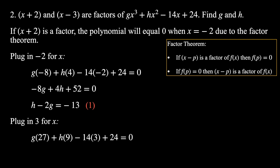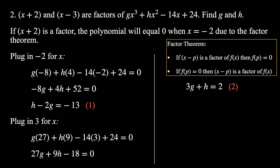Plugging in x = 3: 3³ = 27, 3² = 9, giving 27g + 9h − 42 + 24 = 0, which simplifies to 27g + 9h − 18 = 0. Dividing through by 9: 3g + h = 2. This is equation 2. So now we have two equations with two unknowns that we can solve for h and g.